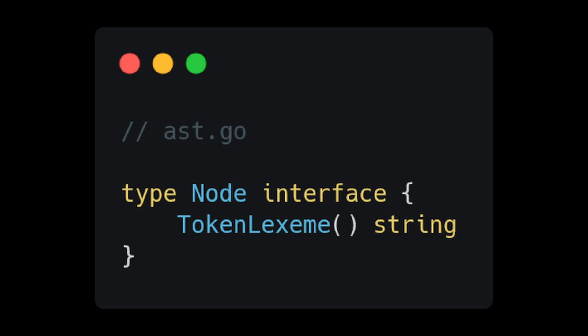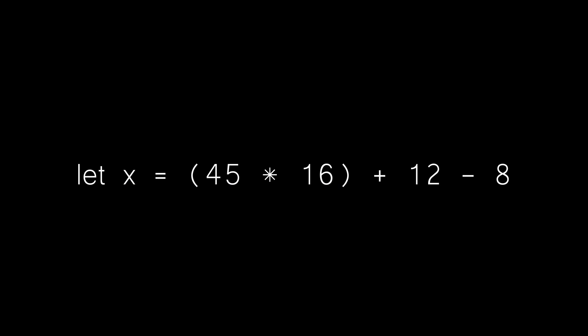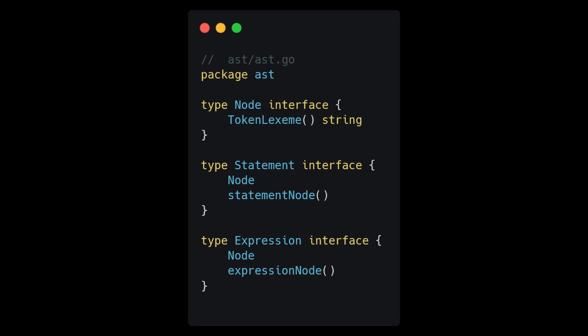Let's create a base interface called Node. The only item we want the children of the Node interface to implement is token lexeme, which is a method that will return the lexeme of the token associated with the node. All of our source code can essentially be boiled down to statements and expressions. Expressions produce values while statements do not, so we are going to create statement and expression interfaces that inherit from our base Node interface.